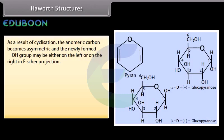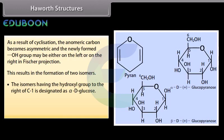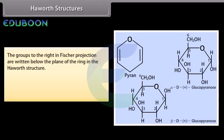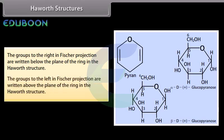As a result of cyclization in Haworth structures, the anomeric carbon becomes asymmetric and the newly formed OH group may be either on the left or on the right in Fischer projection, resulting in the formation of two isomers. The isomer having the hydroxyl group to the right of C1 is designated as alpha-D-glucose; the isomer having the hydroxyl group to the left of C1 is designated as beta-D-glucose. The lower thickened edge of the ring in Haworth structure is nearest to the observer. Groups to the right in Fischer projection are written below the plane of the ring; groups to the left are written above the plane of the ring.